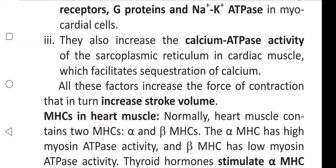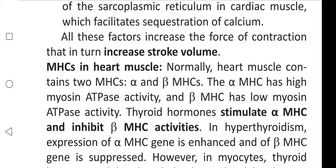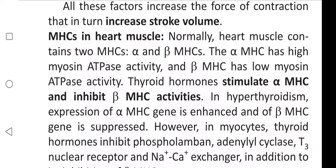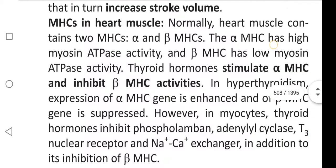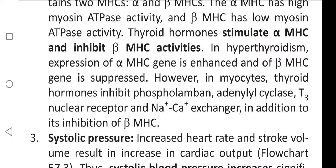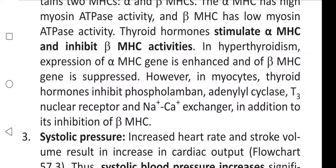Heart muscle normally contains two myosin heavy chains: alpha and beta MHCs. The alpha myosin heavy chain has high myosin ATPase activity and the beta myosin heavy chain has low myosin ATPase activity. Thyroid hormones stimulate alpha myosin heavy chain and inhibit beta myosin heavy chain activities. In hyperthyroidism, expression of the alpha MHC gene is enhanced and the beta MHC gene is suppressed. Additionally, in myocytes thyroid hormones inhibit phospholamban, adenylyl cyclase, T3 nuclear receptor, and sodium-calcium exchanger, in addition to inhibiting beta myosin heavy chain.